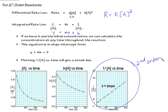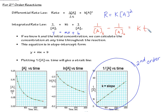Just be aware it's not listed like this in the AP packet. The AP packet will show: 1 over [A] at time T minus 1 over the initial concentration of A equals KT. If you rearrange that into slope-intercept form, the slope is the constant — could be kind of handy.